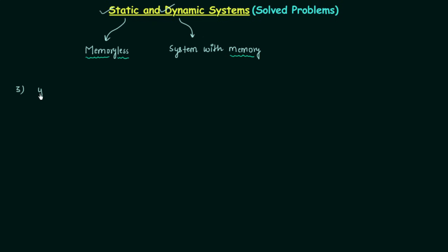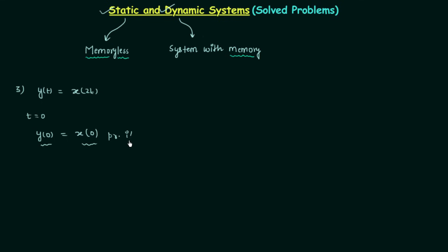In the third practice problem, y(t) is equal to x(2t). We will make t equal to 0, then we have y(0) equal to x(2×0), so we have x(0). We can clearly see the output depends on the present input, and you might say the system is static in nature.